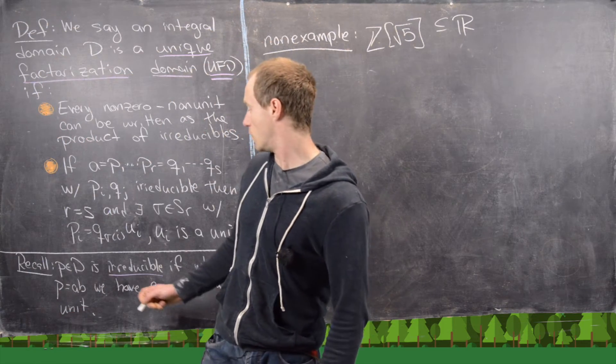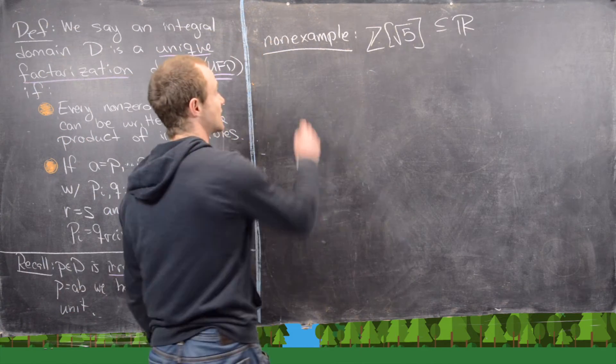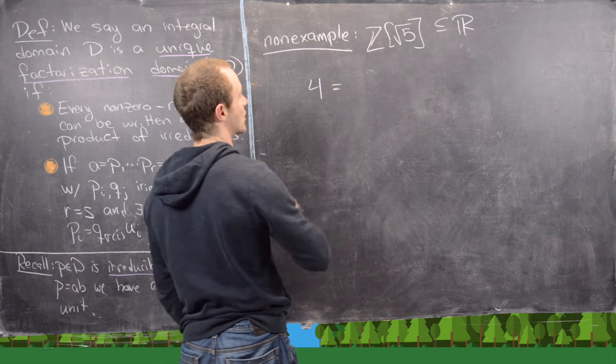And so the main trick here is we want to find an integer that factors two ways that are not compatible with this rule down here. And we can actually use the same integer we used before, in other words, 4.